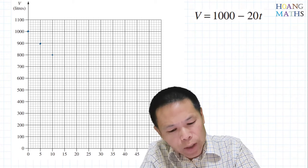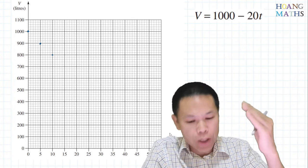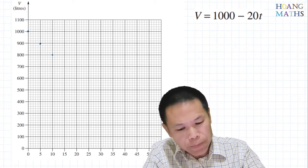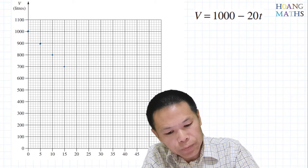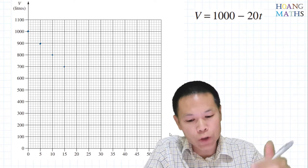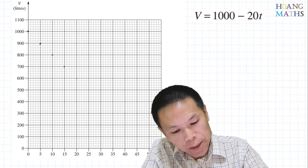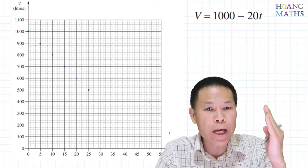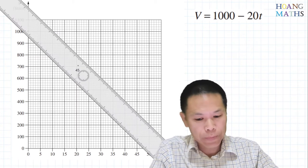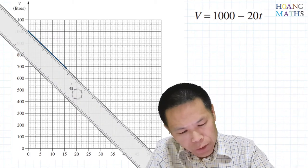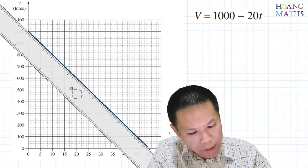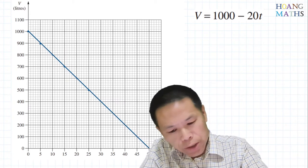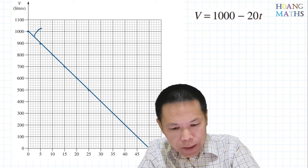It's a straight line going down, because each time we decrease by 20. When t = 15, V = 700. Now I use a ruler and connect the points together, extending the line. I just label it Tank A — done.